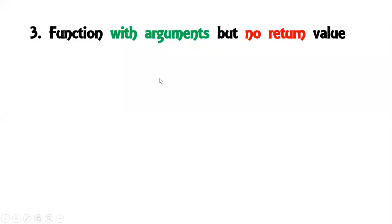We will discuss one more aspect of function calling — functions with arguments but no return value. With arguments means you will give the inputs, but you will not return the answer to the main function. The process will execute in the user-defined function only, and you will get the answer there only. That is what 'with arguments but no return value' means.